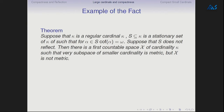Let's see an example of how non-reflecting stationary sets give you a counterexample to reflection. Out of many possibilities, I picked metrizability. Suppose there exists a non-reflecting stationary set S of points of cofinality ω in κ. Then you can find a first countable space of cardinality κ such that every subspace of smaller cardinality is metrizable, but the whole space is not metrizable.